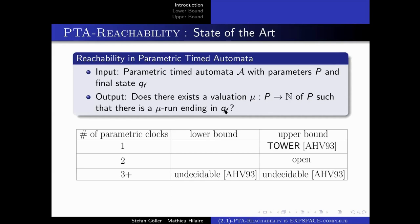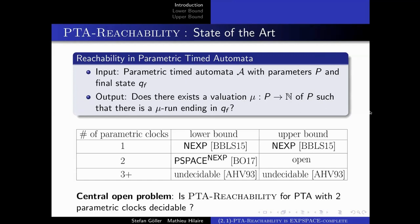The problem, along with the model, was introduced by Alur, Henzinger, and Vardi, who showed that if you have three parametric clocks — that is, clocks that can be compared against parameters — and arbitrarily many non-parametric clocks, then the problem is already undecidable. Recently there have been advances for the case of one parametric clock and arbitrarily many non-parametric clocks: the problem has been shown to be NEXP-complete. For the case of two parametric clocks and arbitrarily many non-parametric clocks, we only know a PSPACE-with-NEXP-oracle lower bound.